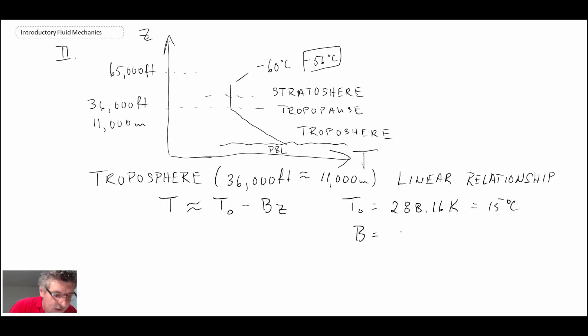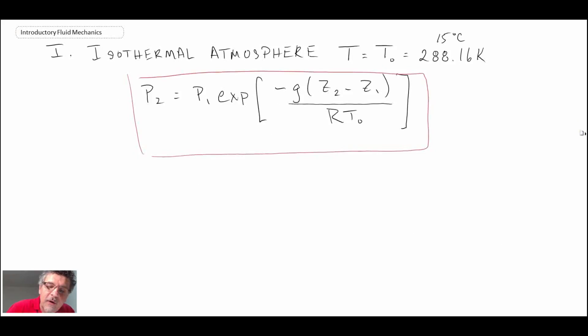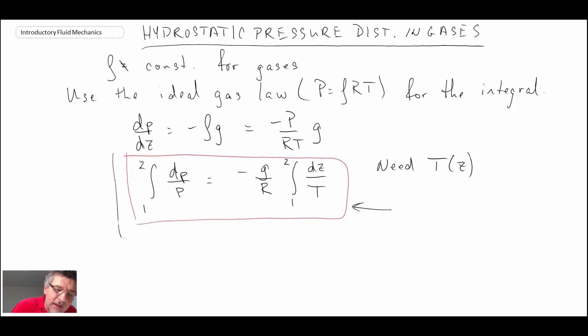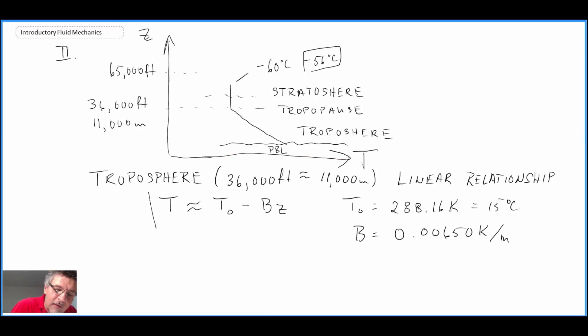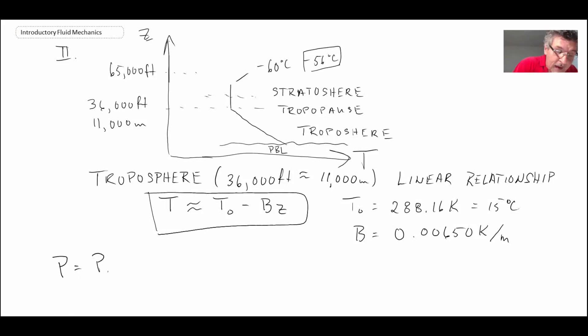And B, that is the rate at which the temperature is dropping. It is 6.5 millikelvin per meter that you go up. If we go back to our equation and we put in that distribution for the temperature for the stratosphere, which is this one here with those constants, what we will find is we get the pressure as being the atmospheric pressure times 1 minus BZ divided by T₀, raised to the power of G divided by the gas constant for air and B, that would be the slope of the temperature gradient.